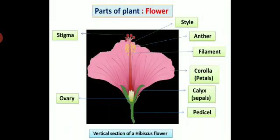Next part of the plant is flower. Observe vertical section of a hibiscus flower and its parts. Parts of flower are calyx, corolla, filament, anther, style, stigma, ovary and pedicel.